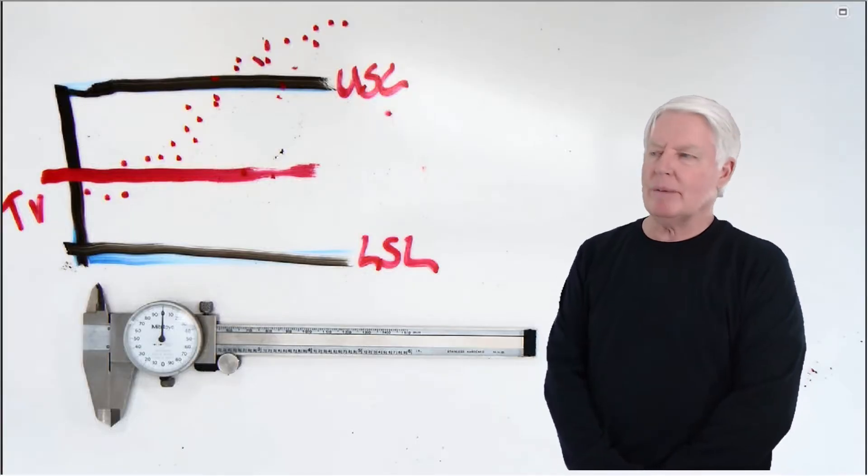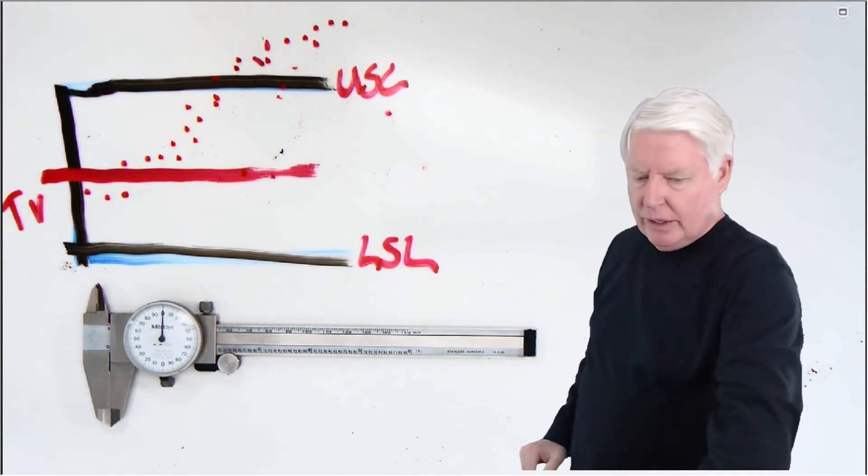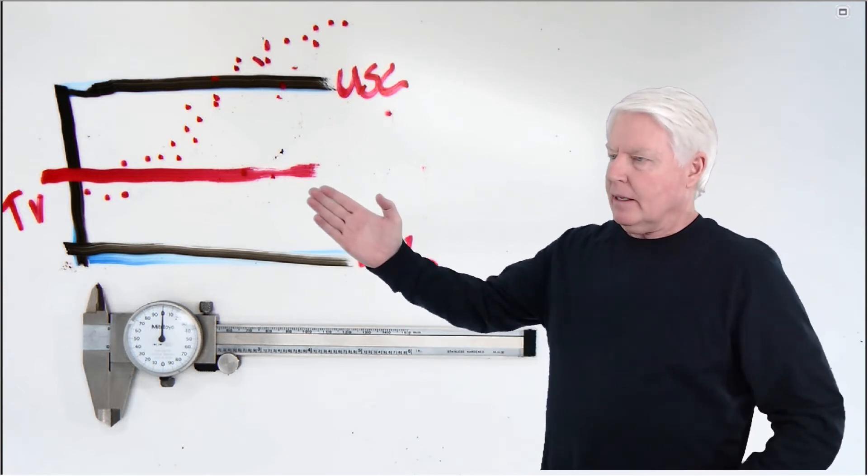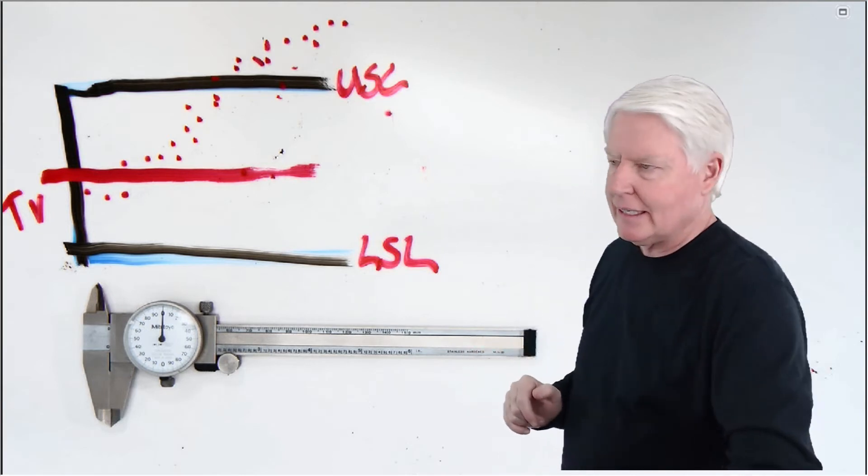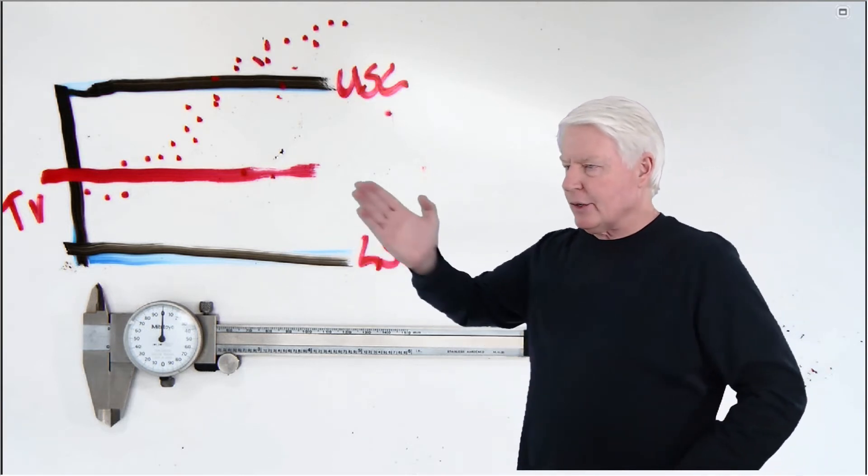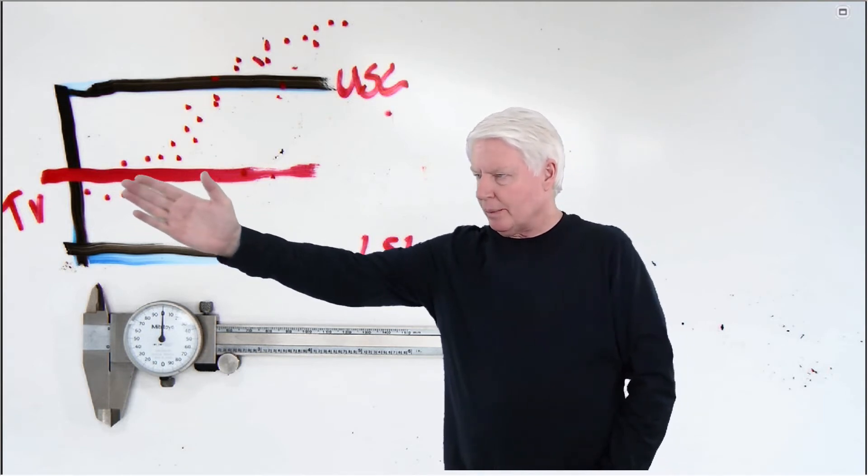Here we are at my whiteboard. Notice I've already drawn something out for you here. So this is the true value of whatever I'm measuring. Let's say I'm measuring the diameter of this pen. We always use that as an example. But anyway, this is the true value and this is right after calibration. So we're pretty good here.